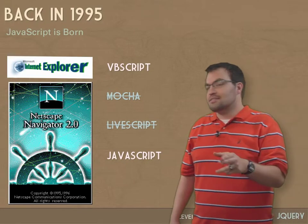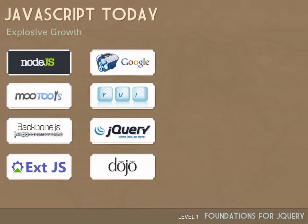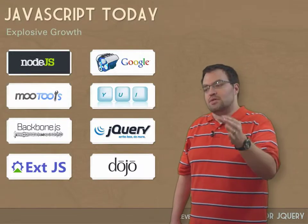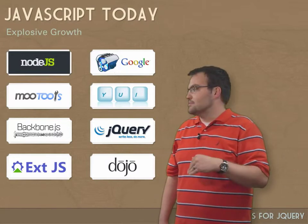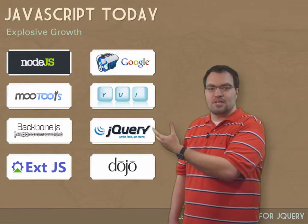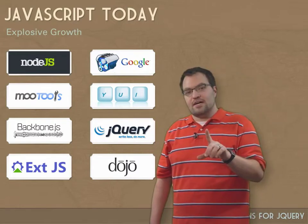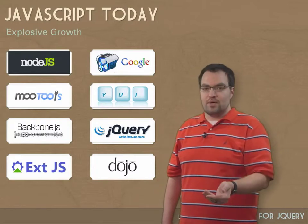Now today, 16 years later, it's a totally different world. We've got things like Node.js doing server-side JavaScript. Google's V8 engine is an incredibly fast JavaScript engine that works away from the browser. You can do anything in JavaScript now — MooTools, Backbone.js is an MVC framework in JavaScript. If there's one language you're going to learn in the next five years, it should be JavaScript. This is the most important part of the future of the web.